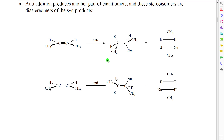Anti-addition on the same molecule would also produce a pair of enantiomers. We would add, for example, the electrophile from the top and the nucleophile from the bottom, producing this molecule, which, converted to a Fischer projection, would have this structure. We could also add the electrophile from the bottom and the nucleophile from the top, producing this molecule, which would have this Fischer projection. Comparing these two Fischer projections, they are mirror images that are not superposable — therefore they are enantiomers.